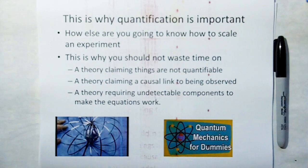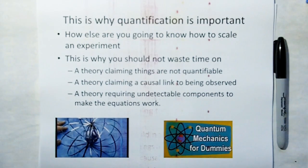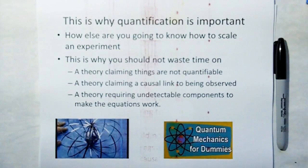Or how about theories claiming a causal link to being observed, like quantum mechanics. Or another theory requiring undetectable components to make the equations work. If you can't detect something, if you can't quantify it, it doesn't exist.